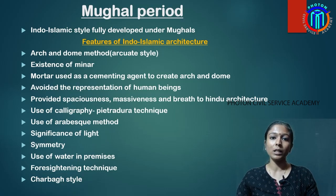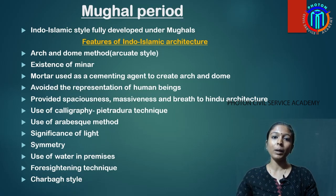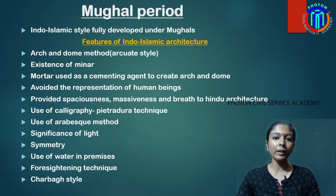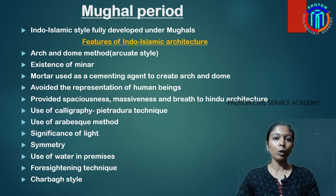The Mughal rulers — Akbar, Shah Jahan, Humayun, and others — contributed to what we call Mughal architecture, or Indo-Islamic architecture. This developed as a result of the Muslim invasion of India, through which the features of Islamic architecture were incorporated. That is why we call it Indo-Islamic architecture, and it reached its full development during the Mughal period.